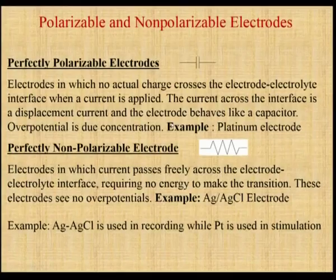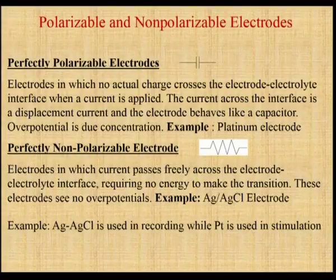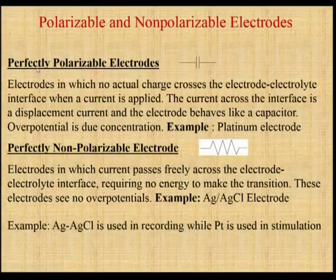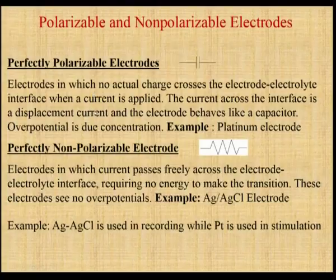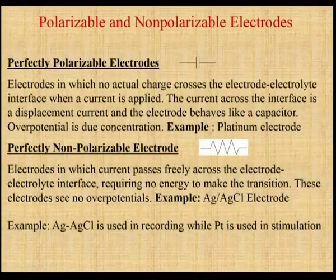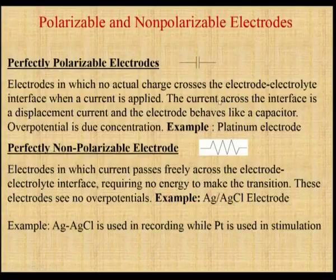Welcome back. Here we discuss polarizable and non-polarizable electrodes. We already know the types — micro electrodes, skin electrodes, surface electrodes, and needle electrodes — which all come under the basic formation of polarizable and non-polarizable. Perfectly polarized electrodes represent no actual charge transfer across the electrode-electrolyte interface. When current is applied, there is no flow of ions, and the current across the interface is displaced by the electrical behavior of the electrode, hence it acts simply as a capacitor. A perfect example of a polarizable electrode is the platinum electrode.